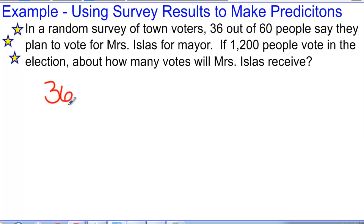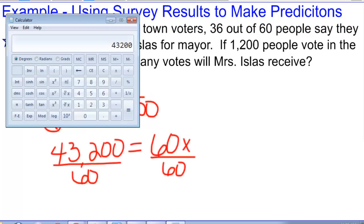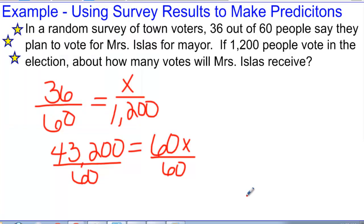So we have 36 out of the total of 60 people who said that they plan to vote for her, and we want to know then if my total voters is 1,200, how many out of those will actually vote for her. And so again, I just set up a proportion and now I am going to cross multiply. And so I can see that my predicted result would be that about 720 out of those 1,200 people would vote for her. And so I could use that to predict how well she was going to do in the election.